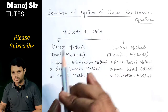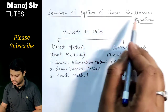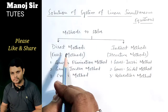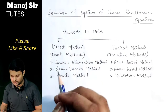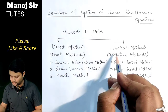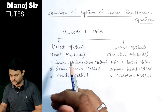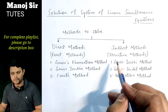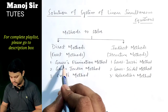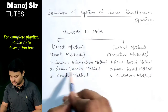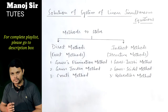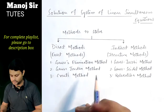To solve systems of linear simultaneous equations we have two methods: direct methods and indirect methods. Direct methods give you the exact values of variables x, y, and z, so this method is also known as the exact method. In direct methods we have three methods: first, Gauss elimination method; second, Gauss-Jordan method; and third, Crout's method, which is also known as the factorization method or LU decomposition.